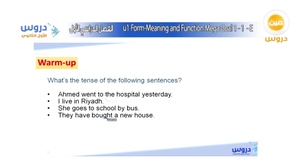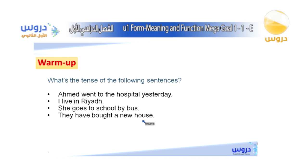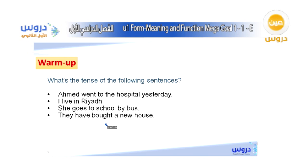To begin with, we have a question: what do you think the tense of the following sentences is? Number one: Ahmed went to the hospital yesterday. Number two: I live in Riyadh. Number three: she goes to school by bus. And the last one: they have bought a new house. The first thing to do if you want to figure out the tense of any sentence is to look at the verb. The verb of the first one is 'went,' the second is 'live,' the third is 'goes,' and the fourth is 'has bought.'